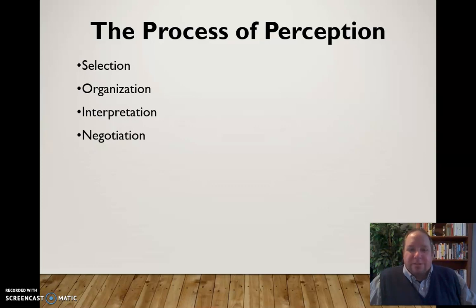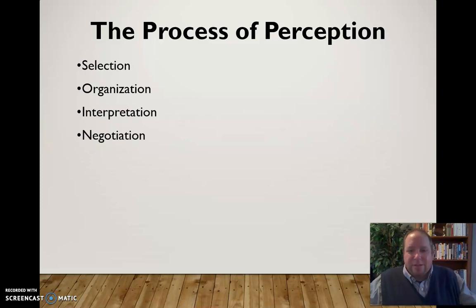The four stages of the process of perception are selection, organization, interpretation, and negotiation. Selection involves what we're going to pay attention to — what is it that we're going to focus our attention on? Especially in the contemporary world, we have myriad options of things to pay attention to, to look at, to listen to. So what is it that's going to get our attention? That's the selection process — where are we going to focus our attention?